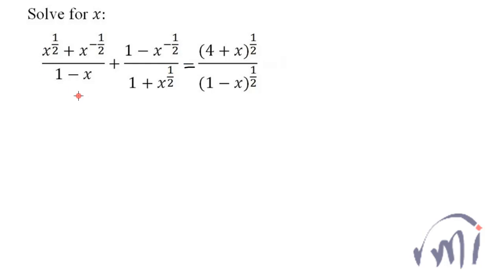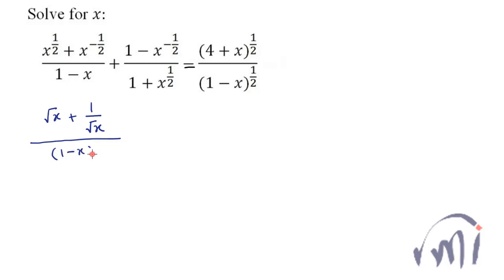So this will become this much equal to this, and now let us try to simplify the left hand side. The left hand side has x to the power 1/2 which can be written as square root of x, plus x to the power minus 1/2 which can be written as 1 divided by square root of x, and in the denominator I have 1 minus x. Similarly this can be written as 1 minus 1 divided by root x, divided by 1 plus root x.